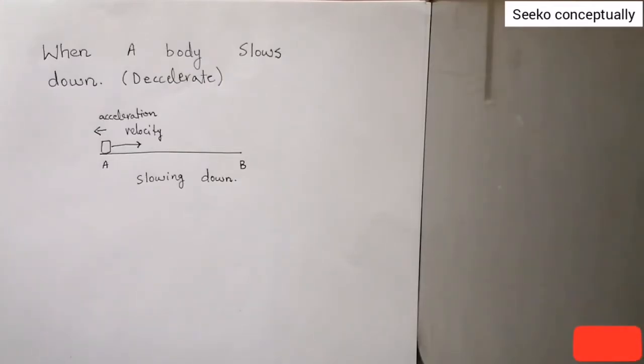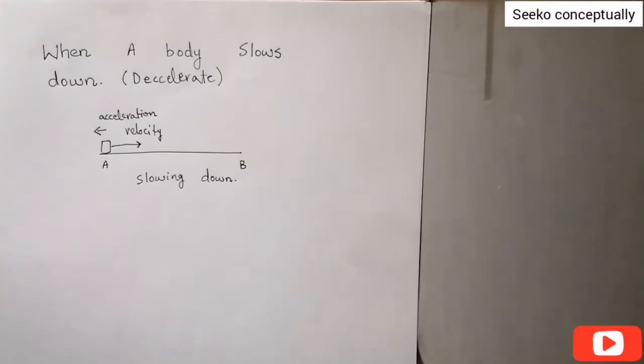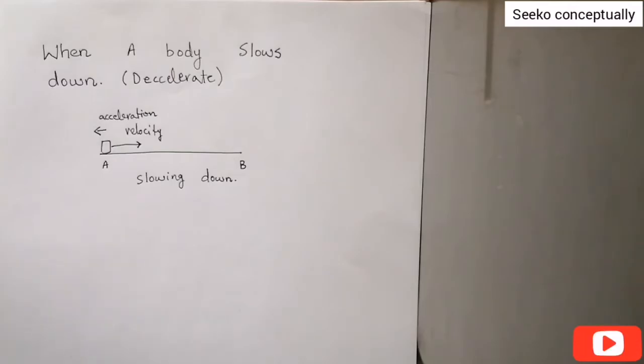Can an object have a northward velocity and southward acceleration? Explain. Yes, a body can have velocity and acceleration in opposite directions.